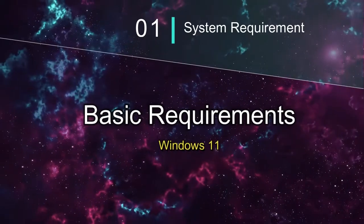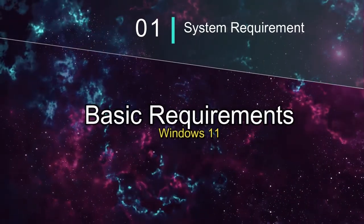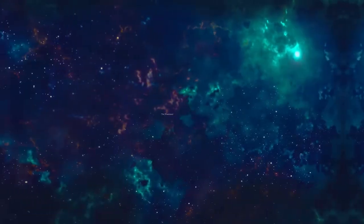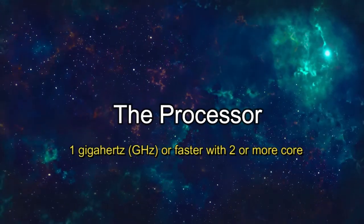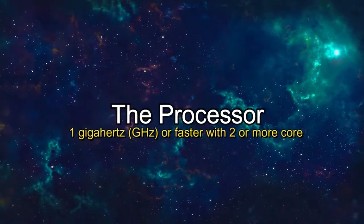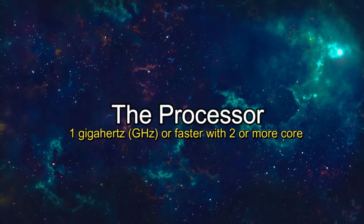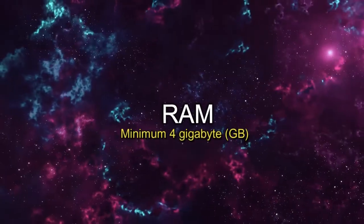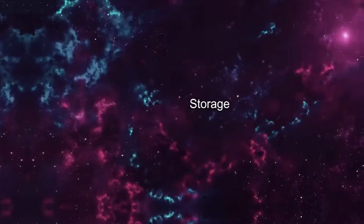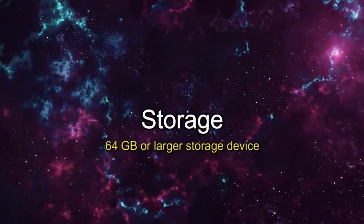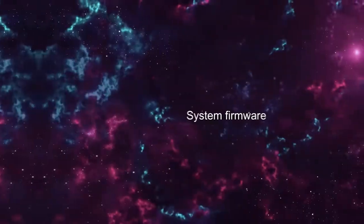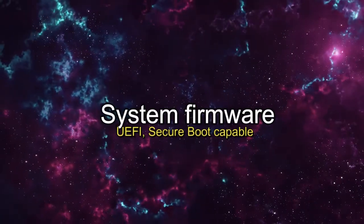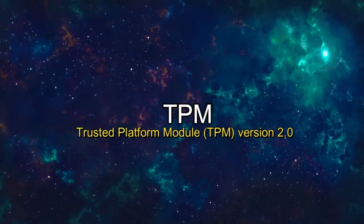Let's start with the basic requirements for installing Windows 11 on a PC. You need a 1 GHz or faster processor with 2 or more cores on a compatible 64-bit processor or system on a chip. RAM: 4 GB. Storage: 64 GB or larger storage device. System firmware: UEFI, secure boot capable. TPM: Trusted Platform Module version 2.0.